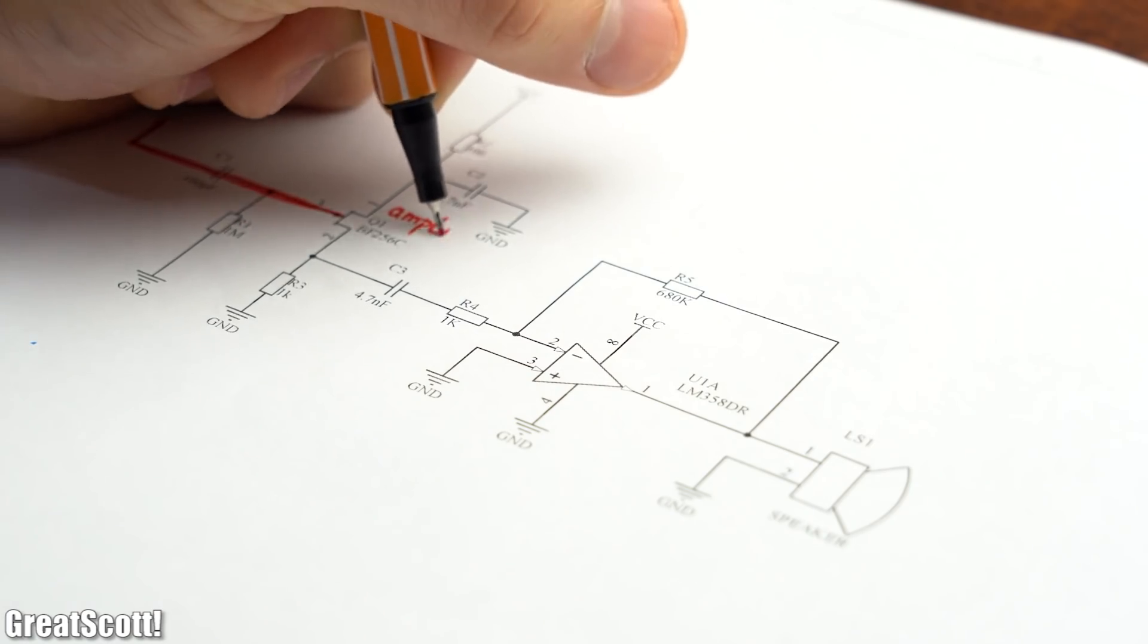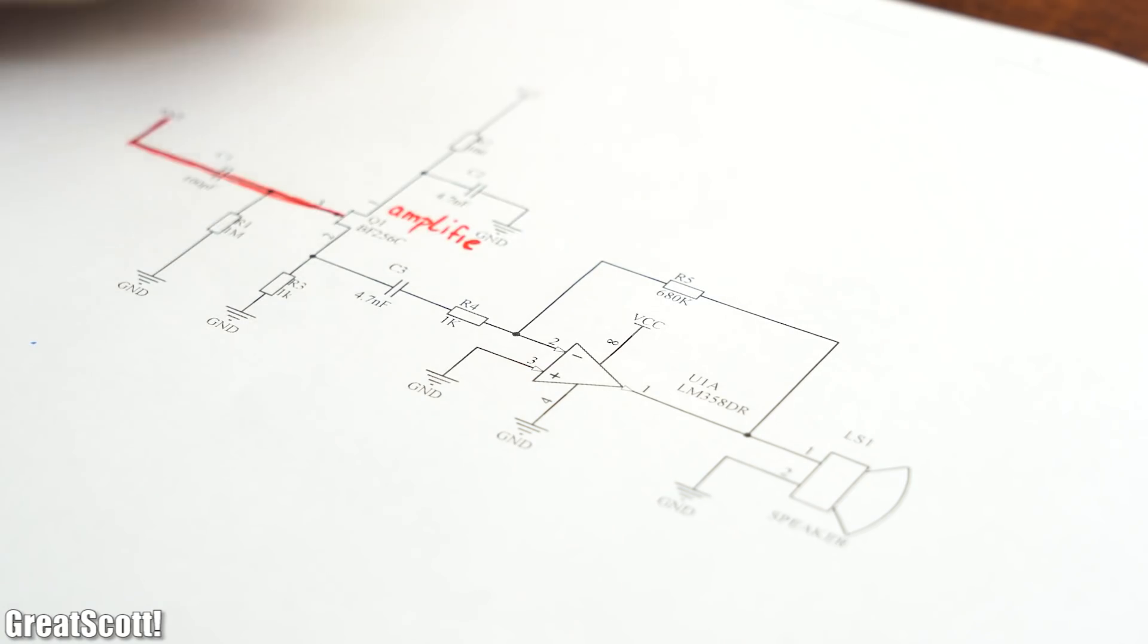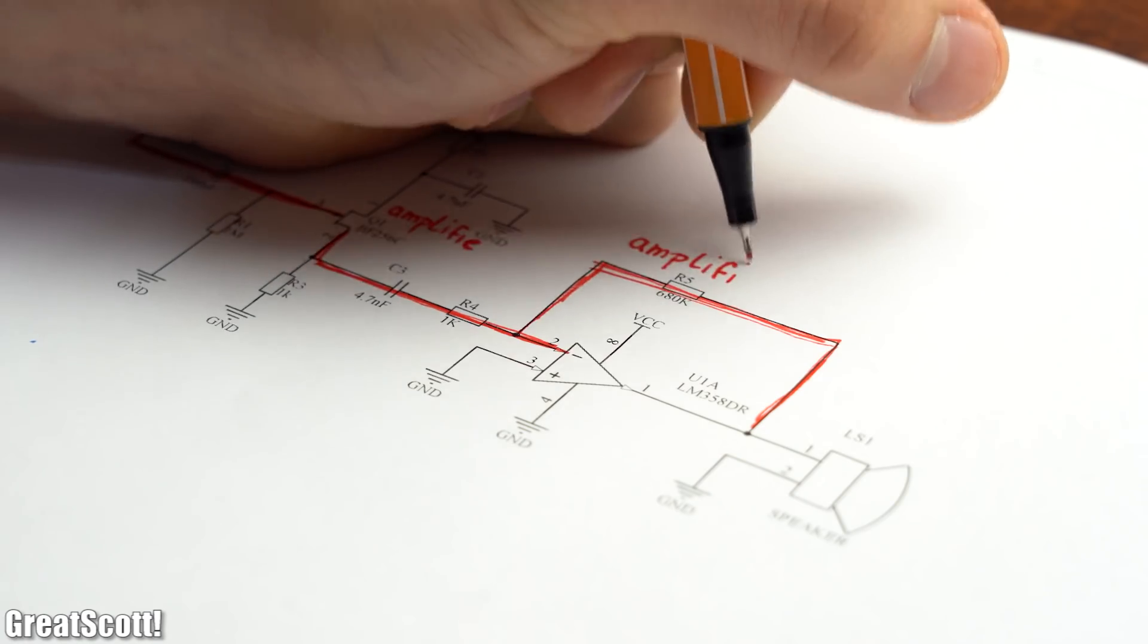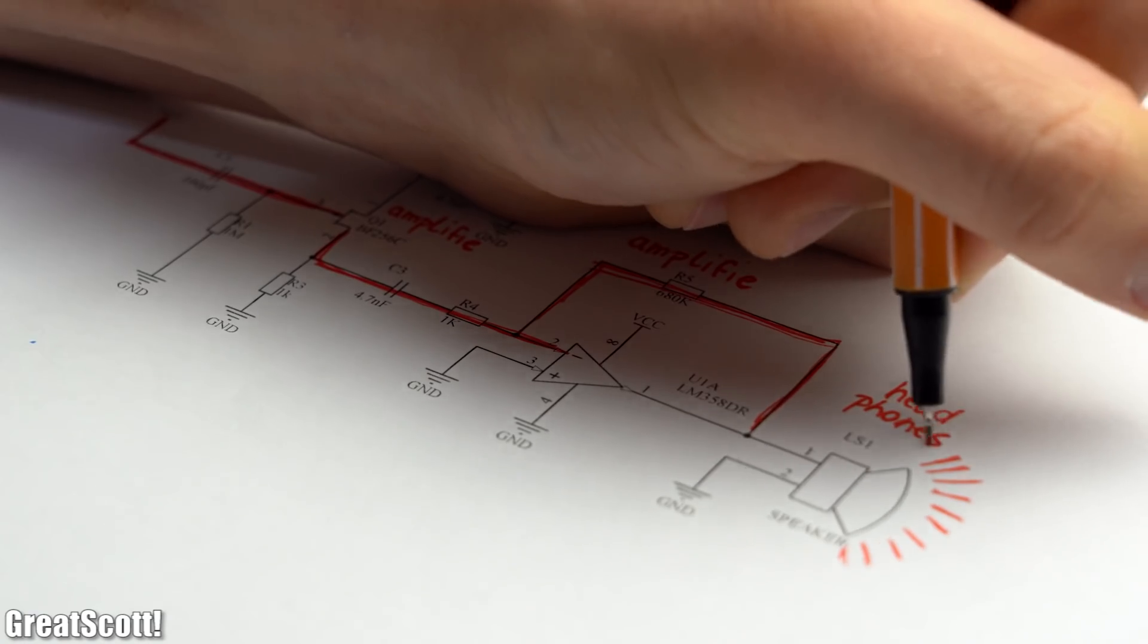It basically does the same thing as the buy receiver circuit by firstly preamplifying the antenna signal and then amplifying it again through the help of an op-amp, which plays back the received tone through headphones.